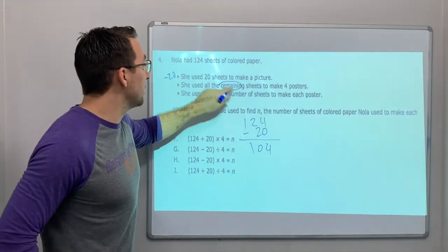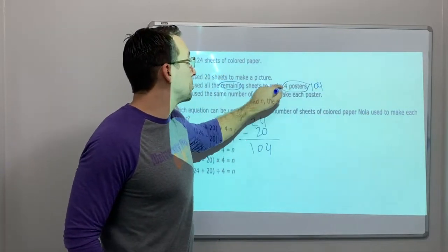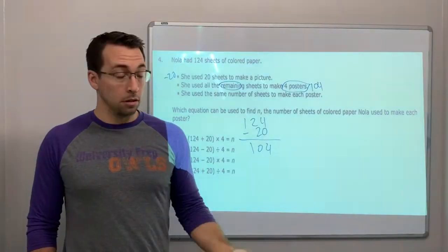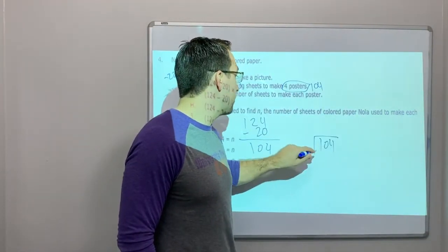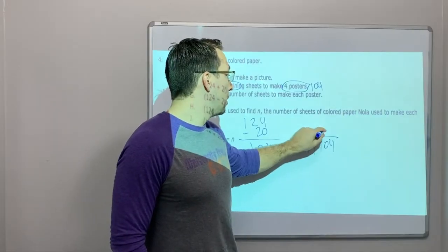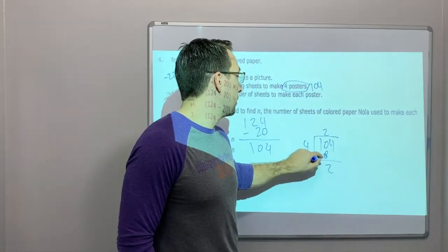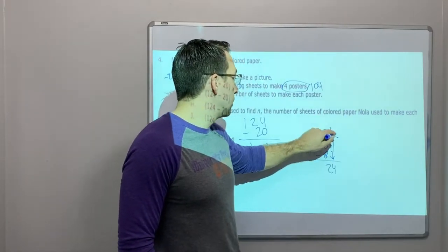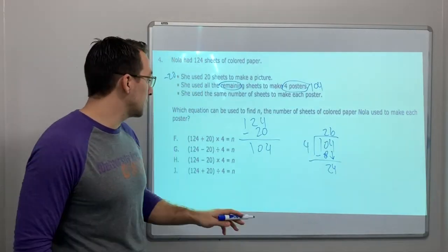She used the remaining 104 to make 4 posters. She used the same number of sheets to make each poster. So there's 4 posters. 104 divided by 4. 2 times 4 is 8. 24 divided by 4 is 6. 26.